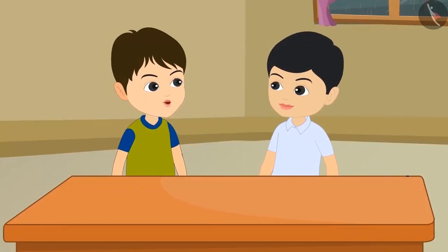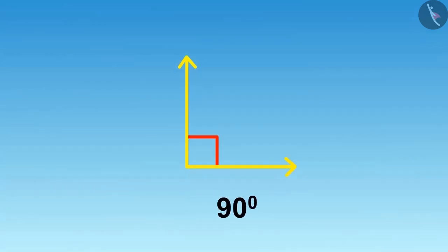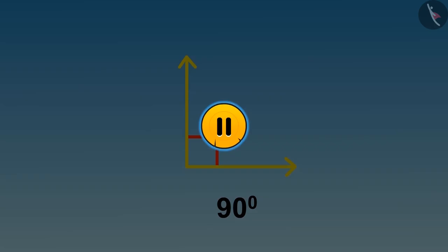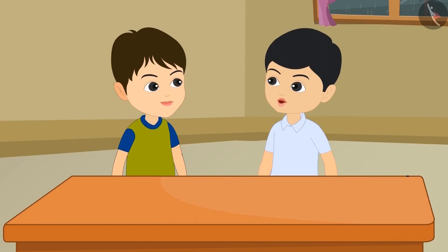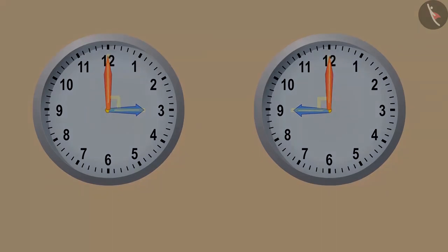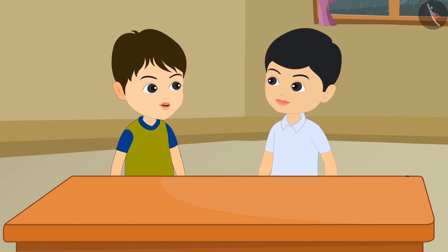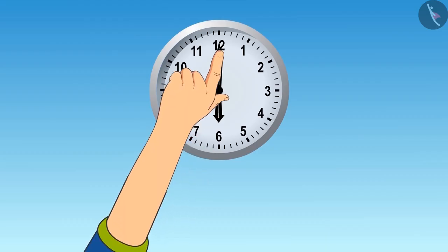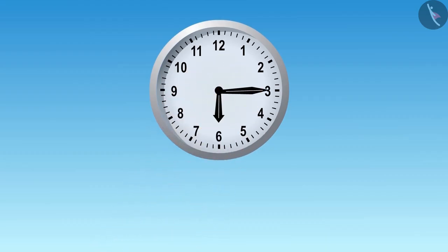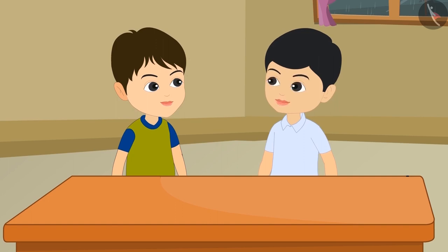Now can you tell me at what all times the angle of 90 degrees is formed in the clock? You can pause the video here if you want and think about it. In my opinion, right angle is made when it is 3 o'clock and 9 o'clock. But I feel that a right angle is also formed when it is 6:15. Come on, let us ask our uncle.